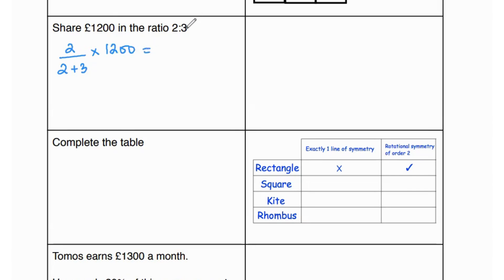So 2 over 5 times 1200 is going to give us £480. And for the other one we could either subtract £480 from 1200 or we could do 3 over 5 times 1200, and that will give us £720. Both ways are correct.